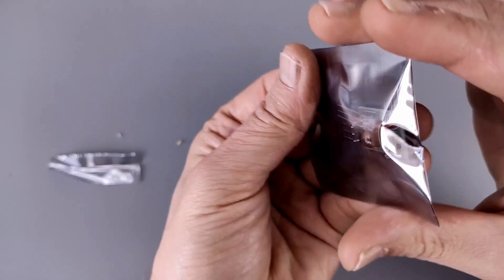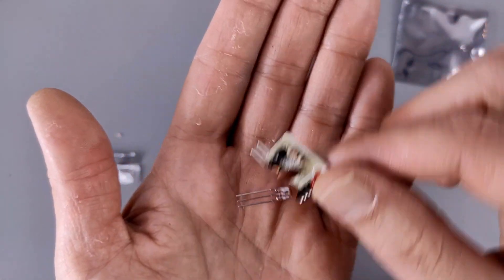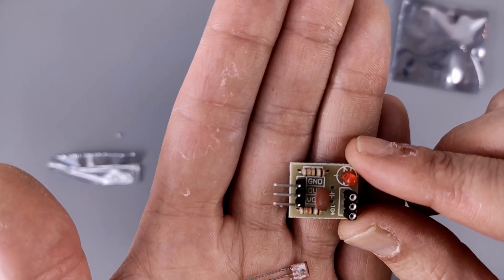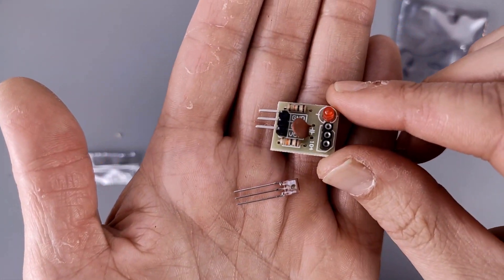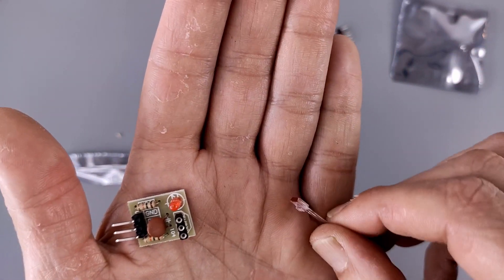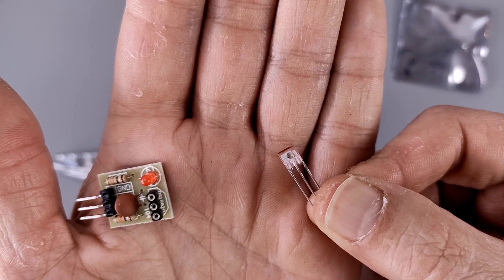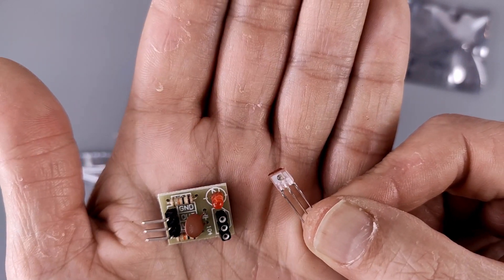So let me open that. What is this? It's a breakout board and is that a photo transistor? I have no idea.